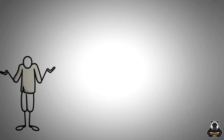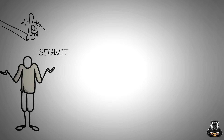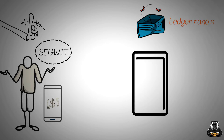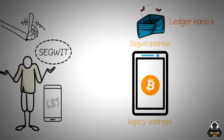As a beginner you should know what SegWit is, because you don't want to get confused and anxious when you see this option when transacting with Bitcoin. If you've ever used a hardware wallet like a Ledger Nano S, you may have noticed that there's an option to send your Bitcoin to a SegWit address or a legacy address. But what exactly is SegWit and what's the difference between it and legacy?